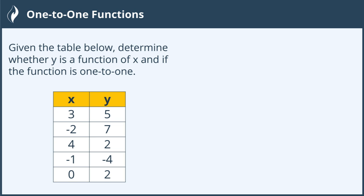To determine if it's a function or not, we need to have one y for one x. The way to tell on this table if it's a function is we look and see, do we have different values for x? So we have a 3, a negative 2, a 4, a negative 1, and a 0. There are no repeating numbers within that table of our x values. So that says to me that chart is a function.